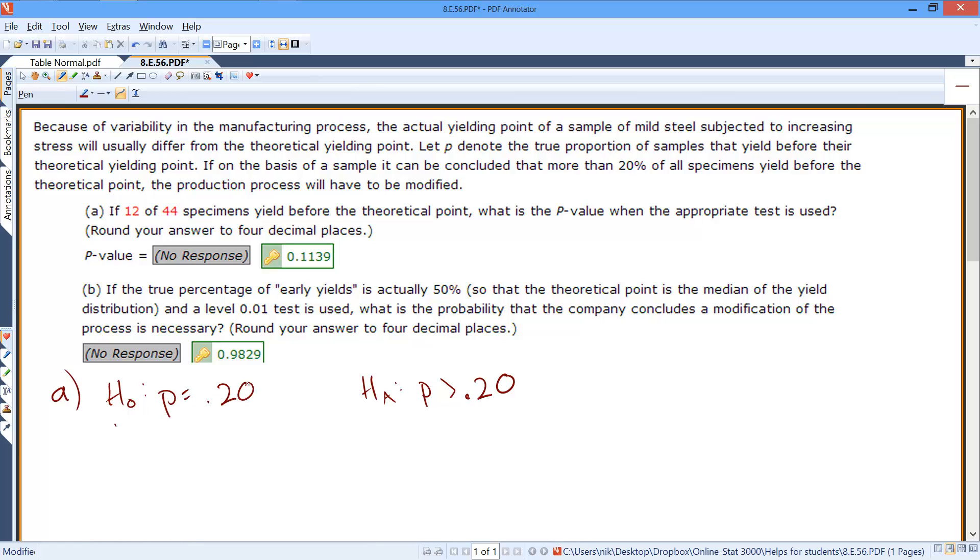Which means that the null hypothesis would be that p equals 20%, which would also have a significance level alpha of 0.05.